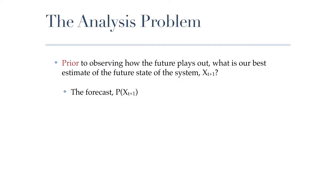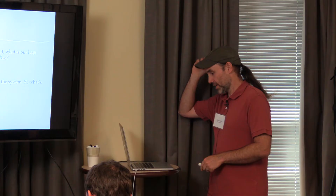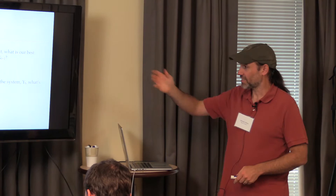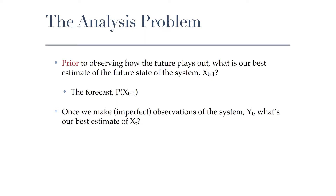So our forecast is our predicted probability of x at time t+1. Now we make observations of the system, but those observations are imperfect. Now what's the best estimate of the state of the system?